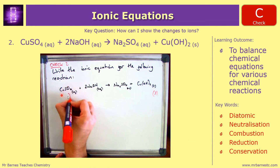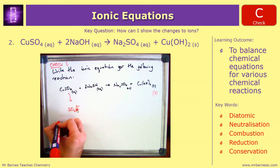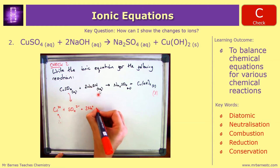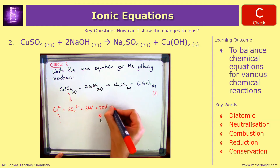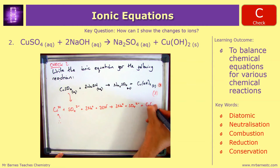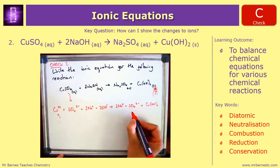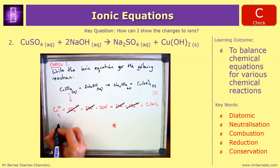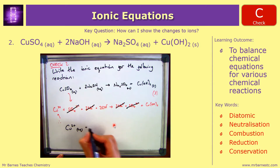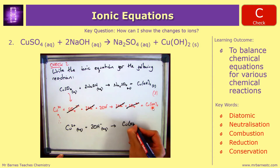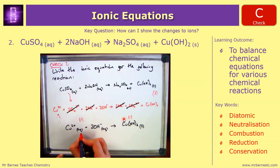For copper sulfate reacting with sodium hydroxide: sulfate is SO₄²⁻, so copper must be Cu²⁺ to balance. Sodium is group 1, Na⁺, two of them. Hydroxide is OH⁻, two of them. On the right: 2 Na⁺, one SO₄²⁻, and copper hydroxide Cu(OH)₂ which is solid so we don't split it. Cross out Na and SO₄²⁻ from both sides. The ionic equation is Cu²⁺ (aq) + 2OH⁻ (aq) → Cu(OH)₂ (s). One mark for reactants, one for products, one for state symbols.